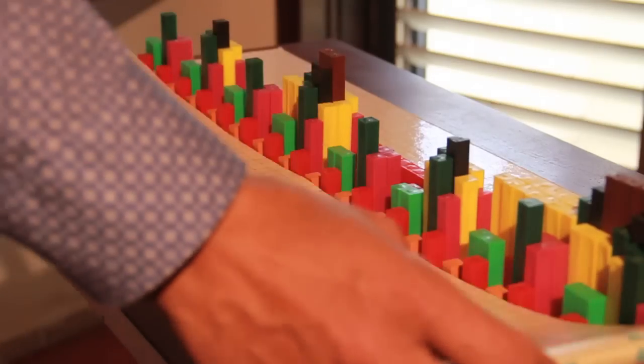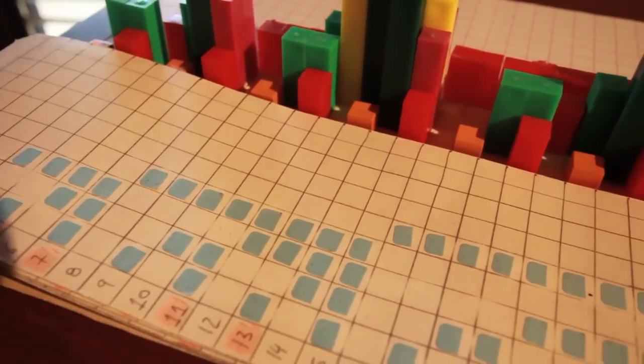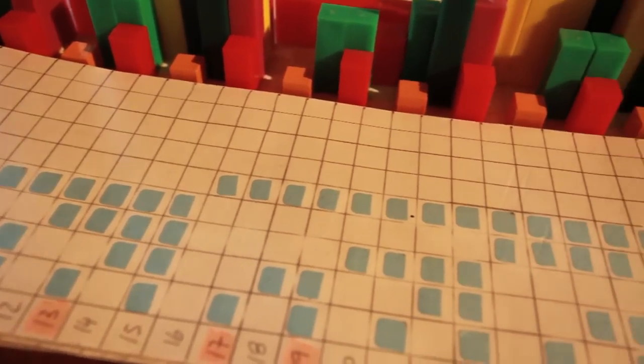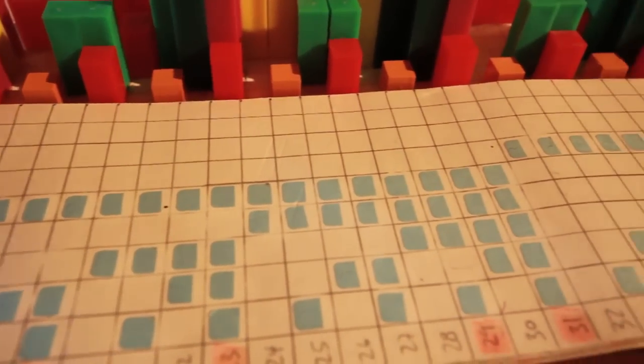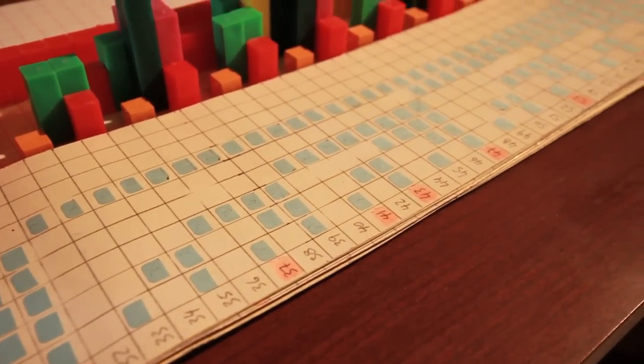So where is the pattern? Look at the model from above. Replace every cube and column with a blue square. Replace every empty space with a white square. What we have now is a pattern that repeats itself at every scale.